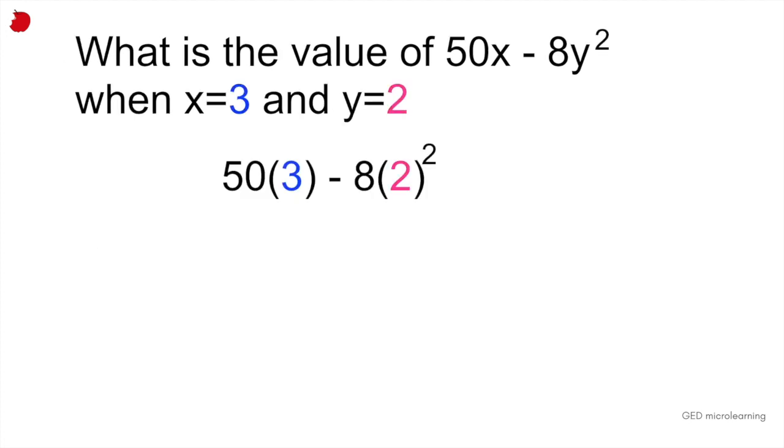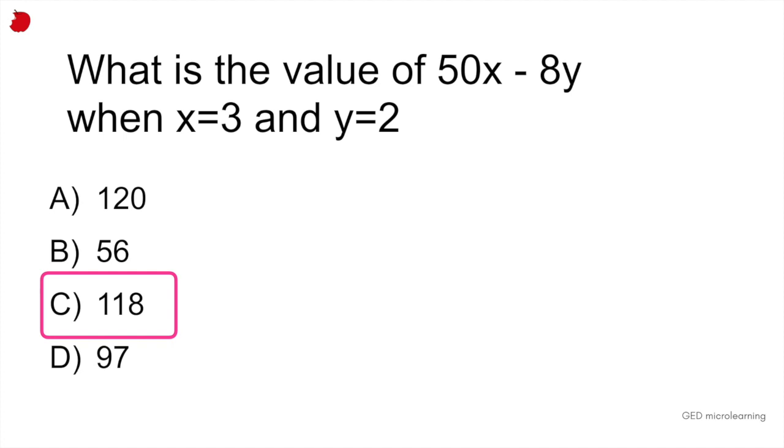So instead of having 50x, we're going to have 50 times 3, which is the value for x, minus 8, instead of y squared, 2 squared. So if we go ahead and solve that, 50 times 3 is 150, and then 2 squared is equal to 4 multiplied by 8. That gives us 32. So now you're left with 150 minus 32, which is 118. So our correct answer would be C.